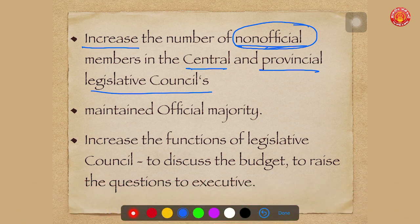But at the same time, the act stated that these legislative councils should maintain an official majority. Official majority means the official members sent by the British Parliament and British Cabinet to assist the Viceroy in the centre and the governor in the provinces should remain the majority in the legislative councils.